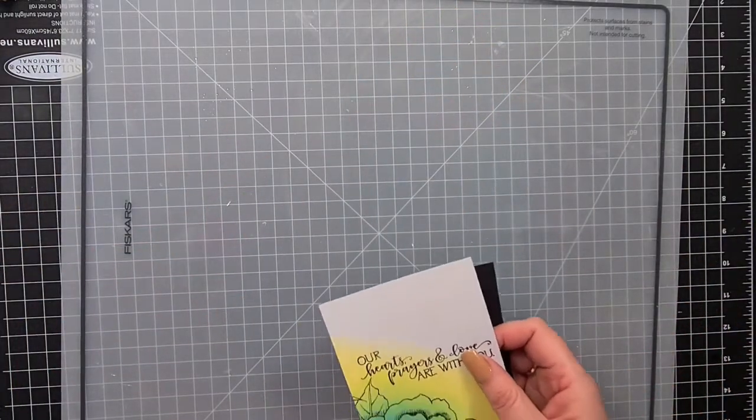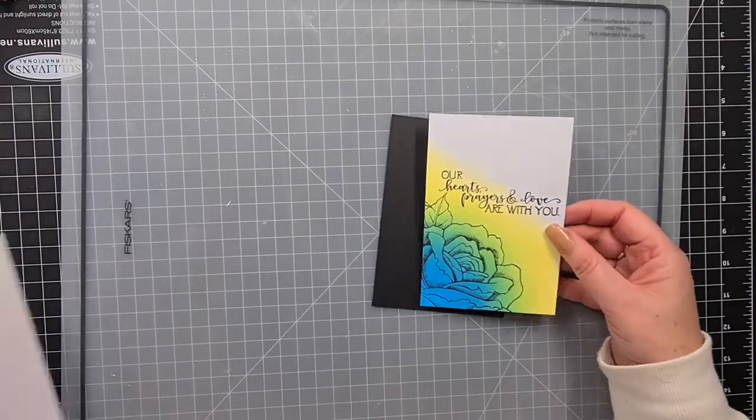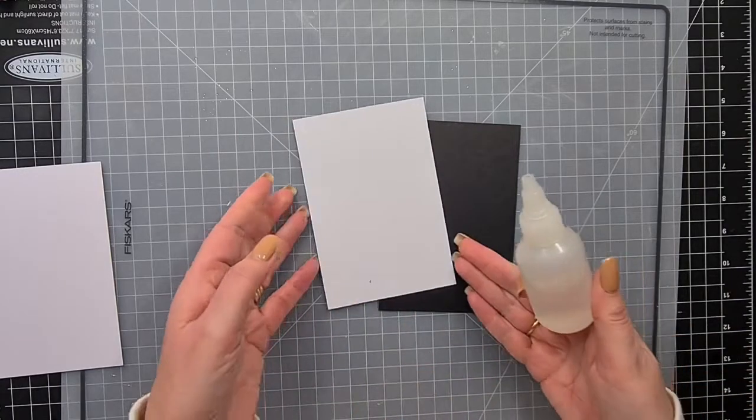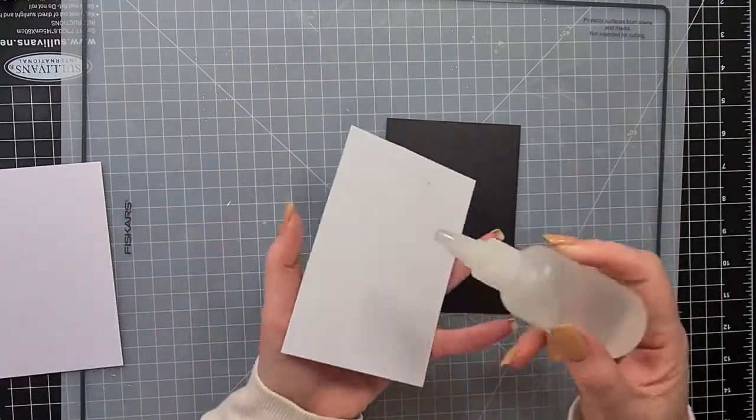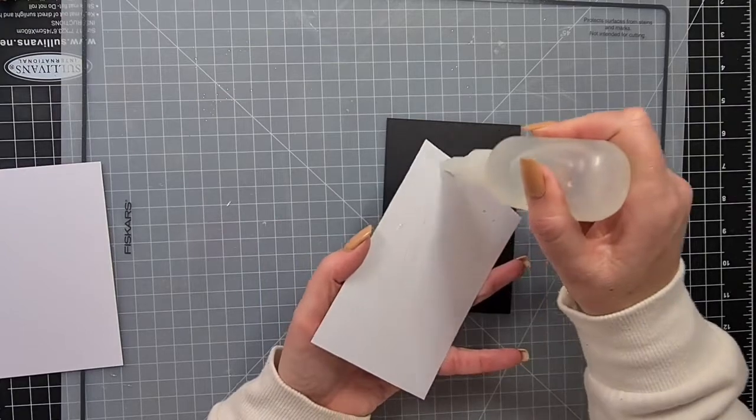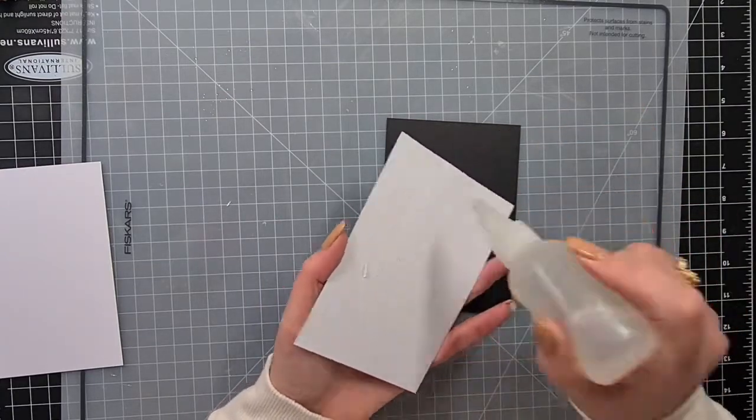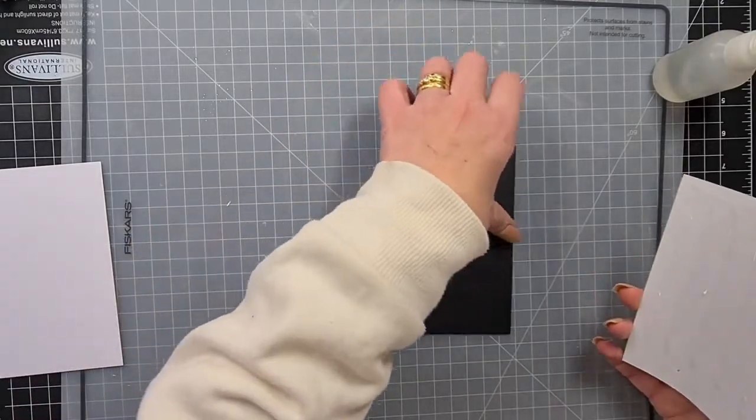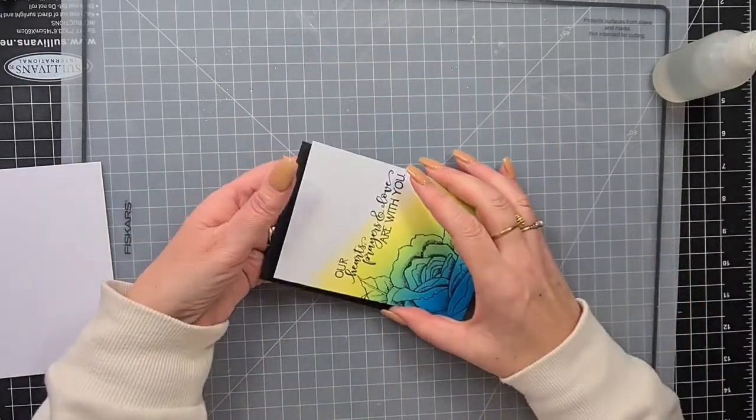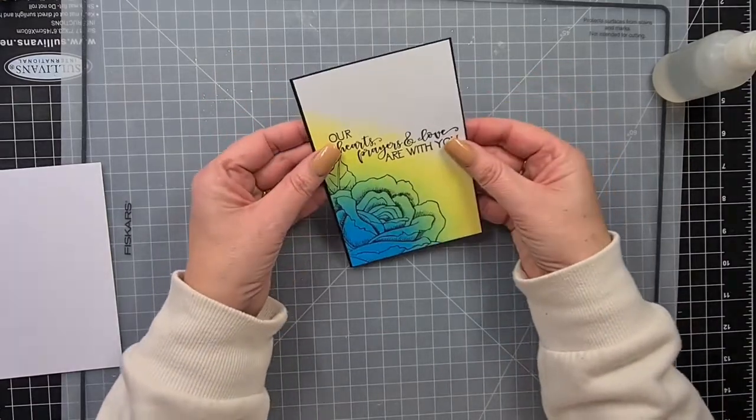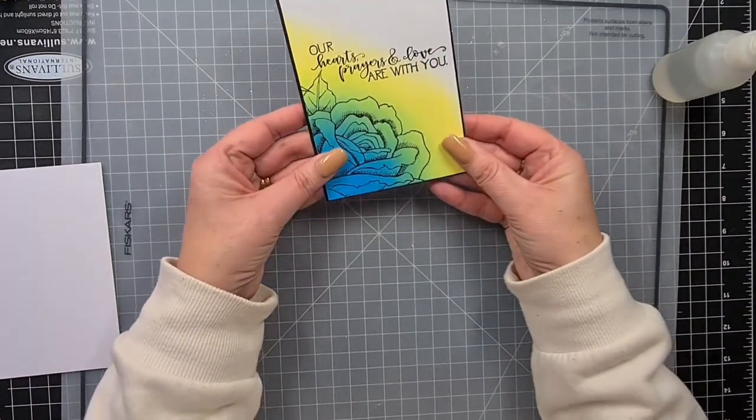I will say I've used my Fiskars craft mat—it's not craft mat, it's Fiskars silicone mat—to do the blending. It just holds. It's similar to the Waffle Flower mixed media mat, although I do find the mat itself moves around, but the cardstock doesn't move around on the mat.